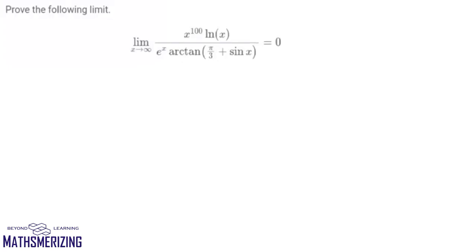The question is to prove that the limit as x tends to infinity of x to the power 100 times log x, divided by e to the power x times arctan(π/3 + sin x), is equal to 0.